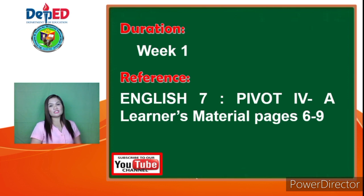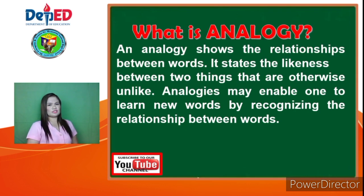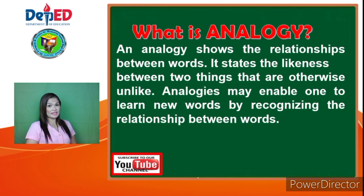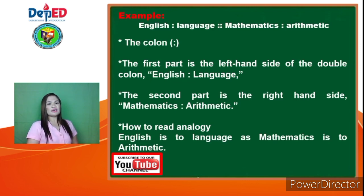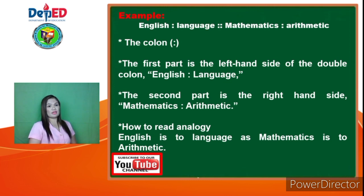Now, going back to our lesson, let's talk about Analogy. So, what is an Analogy? An Analogy shows the relationships between two words. It states the likeness between two things that are otherwise unlike. Analogies may enable one to learn new words by recognizing the relationship between two words. For example, English is to language as mathematics is to arithmetic. The example vividly shows the connection between English and language and mathematics and arithmetic. English is basically a subject focused on language, while mathematics deals primarily with arithmetic or numbers.